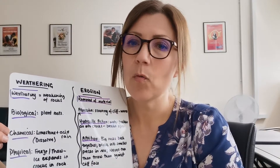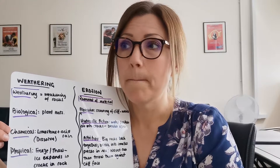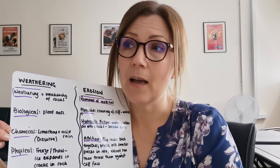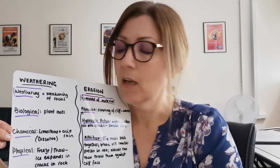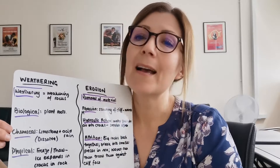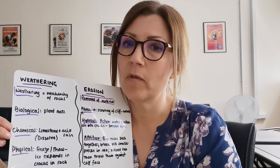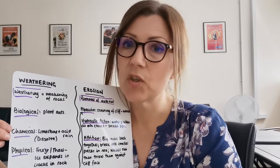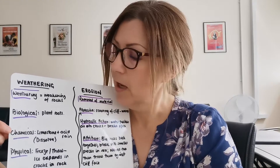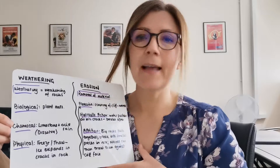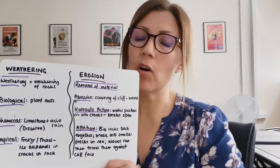The second type is chemical weathering. Chemical weathering happens when we have a rock that can have a chemical reaction. The good example of this is limestone — limestone will react with slightly acidic rainwater and it will start to dissolve. So that is chemical weathering, and that will weaken the rock and make it much easier for erosion to happen.